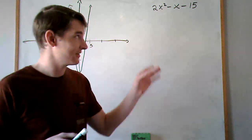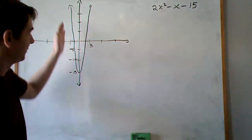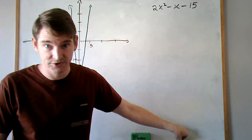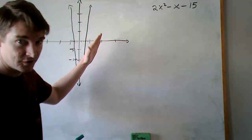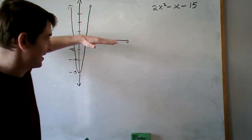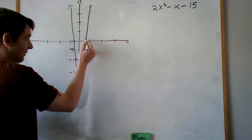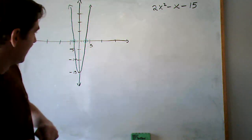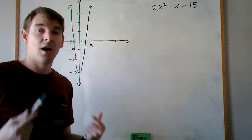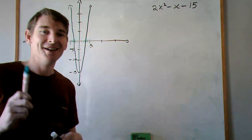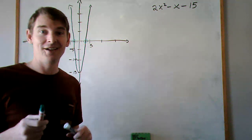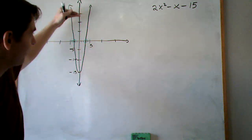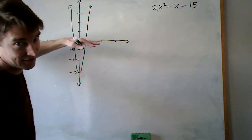What that means is here we've got our function, and graphically this is the same function, and this function has what we call zeros. Zeros are where the function passes the x-axis. So here we have a zero, and here we have a zero. We don't know what these x values are — we're going to find out together. We already know the y value is zero because it's on the x-axis, but what we want to know is what is the x value.